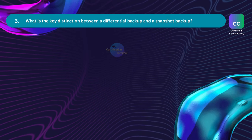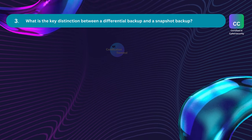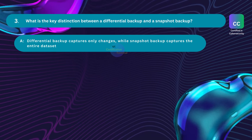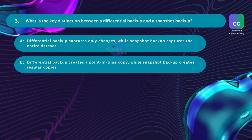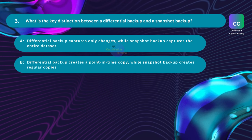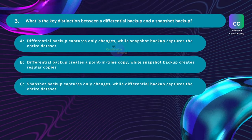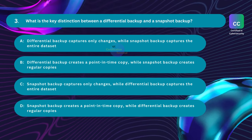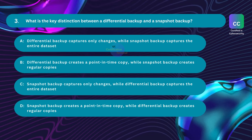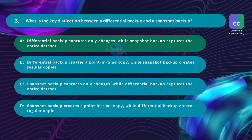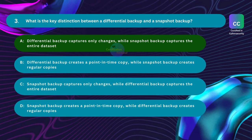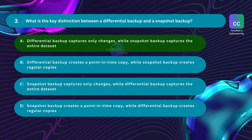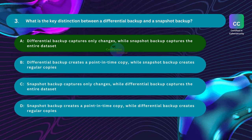Question number three: What is the key distinction between a differential backup and a snapshot backup? Option A: Differential backup captures only changes while snapshot backup captures the entire dataset. Option B: Differential backup creates a point-in-time copy while snapshot backup creates regular copies. Option C: Snapshot backup captures only changes while differential backup captures the entire dataset. Option D: Snapshot backup creates a point-in-time copy while differential backup creates regular copies. The correct answer is Option A — differential backup captures only changes since the last full backup, while snapshot backup captures the entire dataset at a specific point in time.